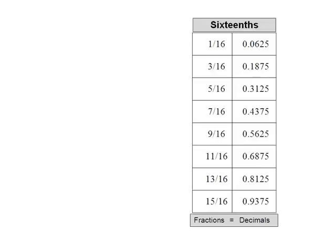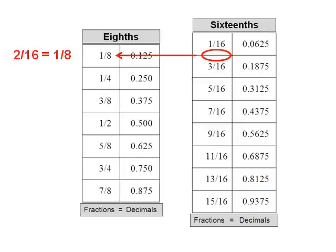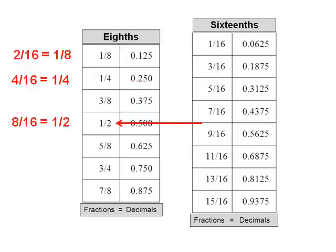A similar chart is used to convert sixteenths of an inch to decimals. Notice, it doesn't list even numbers like two sixteenths, because that would be the same as one eighth in the previous chart. Four sixteenths, expressed in its lowest number, is one quarter, and eight sixteenths is one half, and so on.